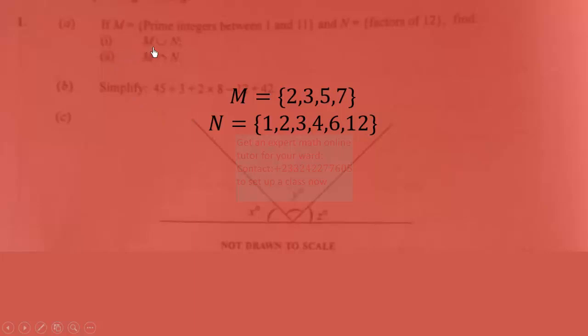The part i requires that we find M union N. So M union N refers to elements that are in M or N or both of them. By enlisting them, we don't repeat any of the elements. So these elements are 1, 2, 3, 4, 5, 6, 7, 12. So this is the set M union N.